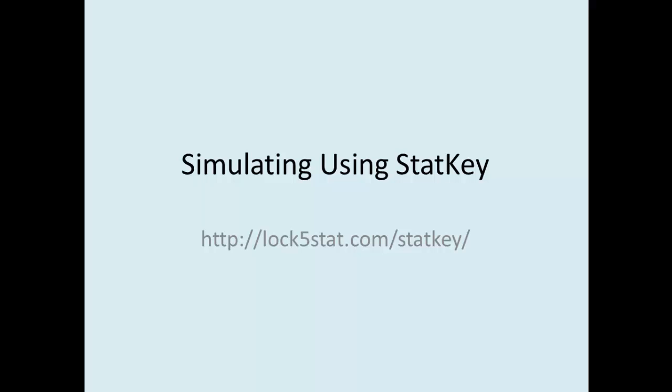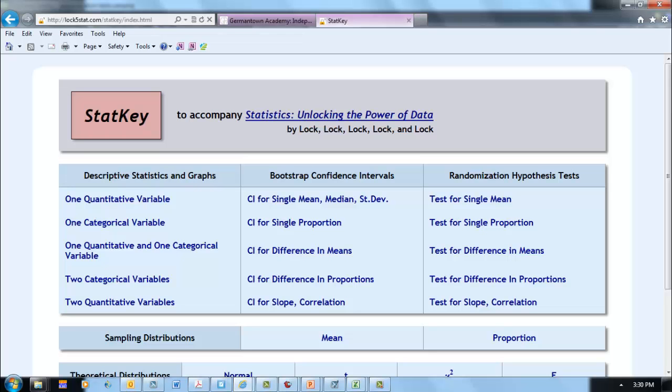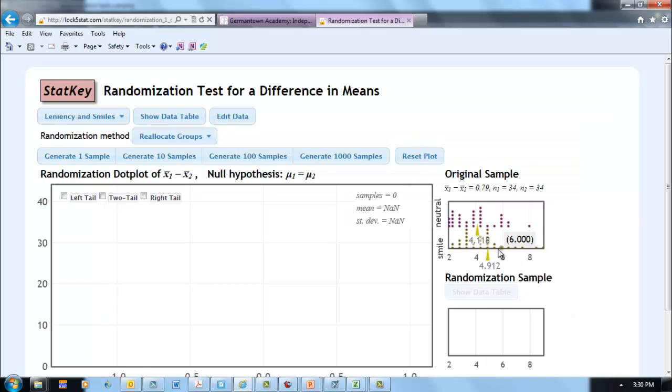Now we'll look at doing the same simulation using StatKey. StatKey is web-based and is freely available at the URL below. We want to do a randomization hypothesis test, and we want to test for a difference in means, so we'll click there.